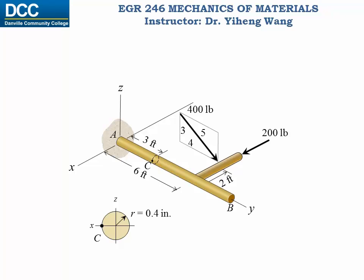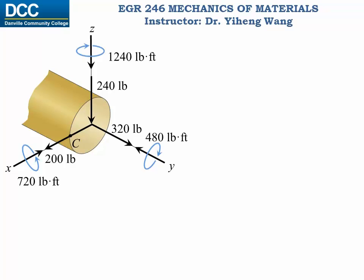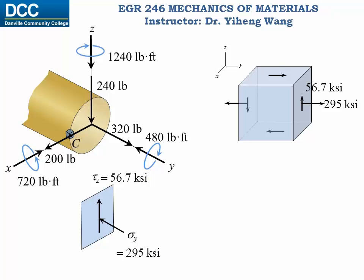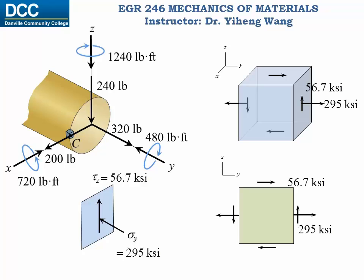Recalling the example from the previous video, we needed to determine the state of stress at point C in a composite beam subjected to external loadings. We first determined all the internal reactions at the cross section where point C is, then evaluated what stress was caused by each internal reaction, combined the stresses and represented them on the surface element at point C. We then extended our results to a volume element based on equilibrium and the complementary property of shear stress, and reduced this to a planar state of stress.